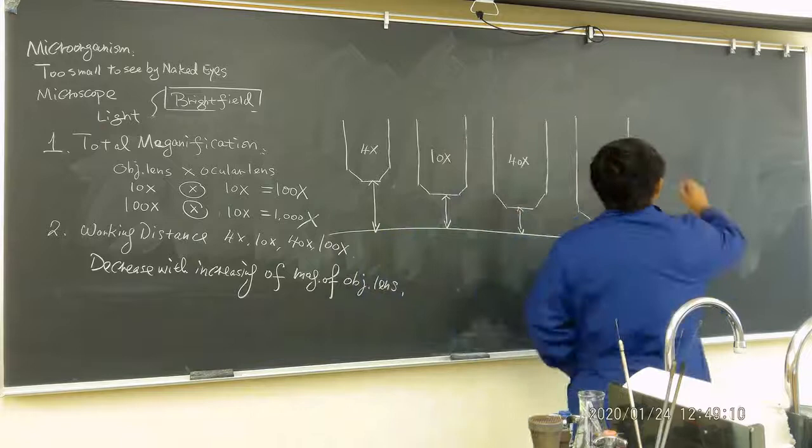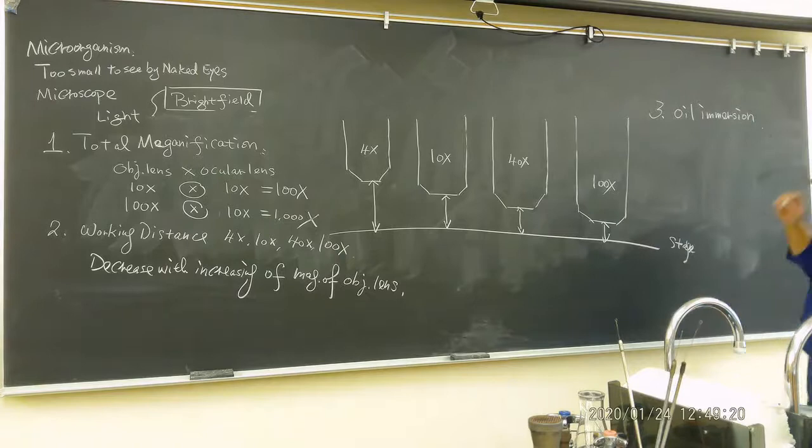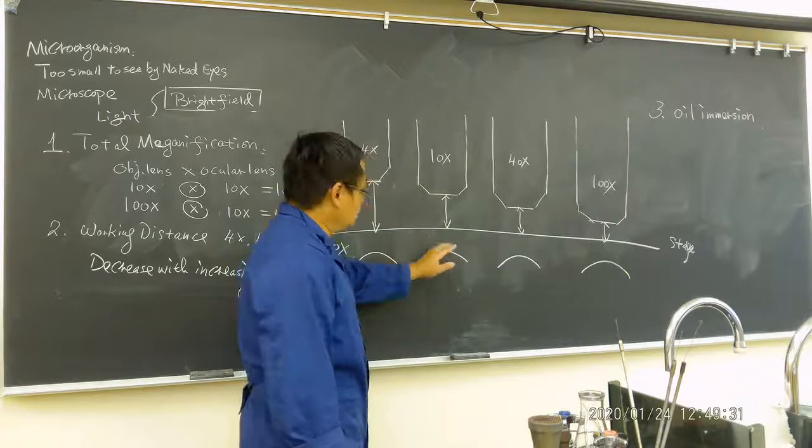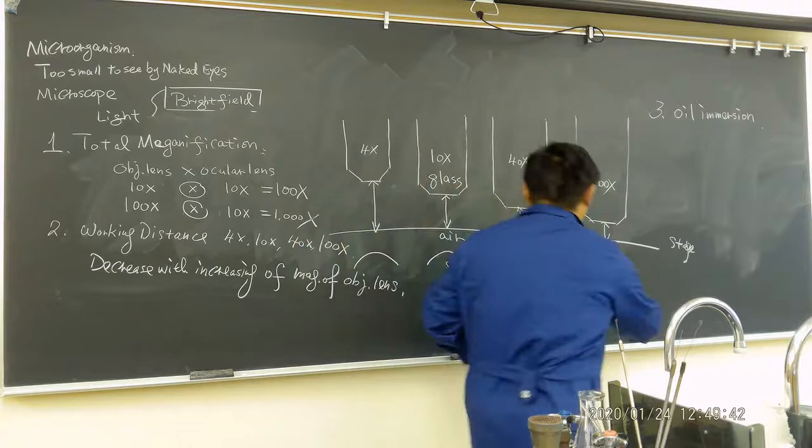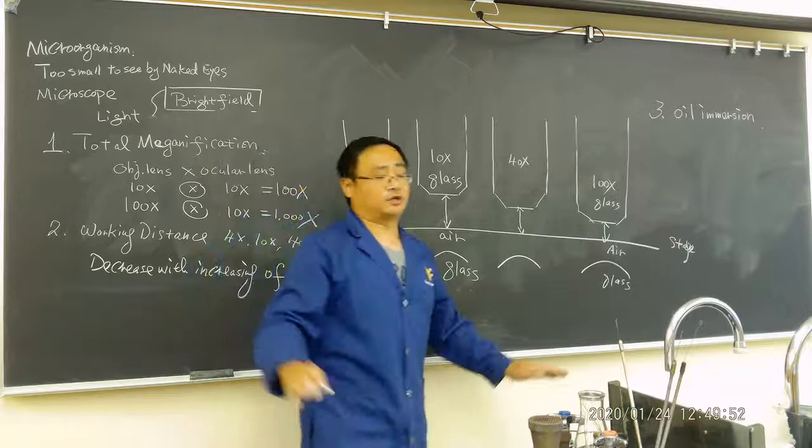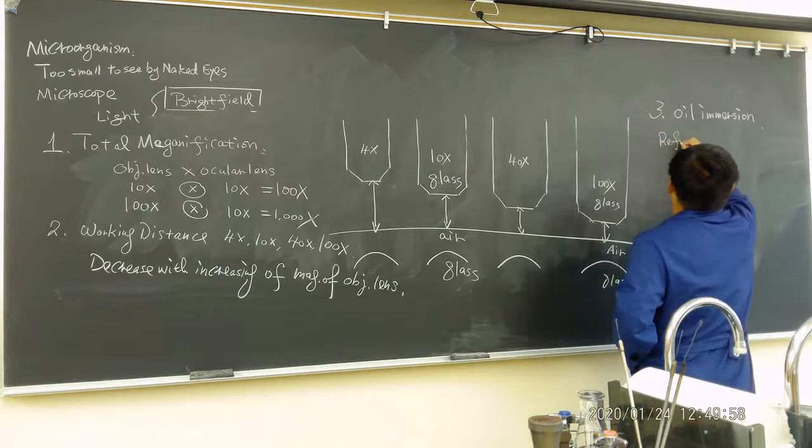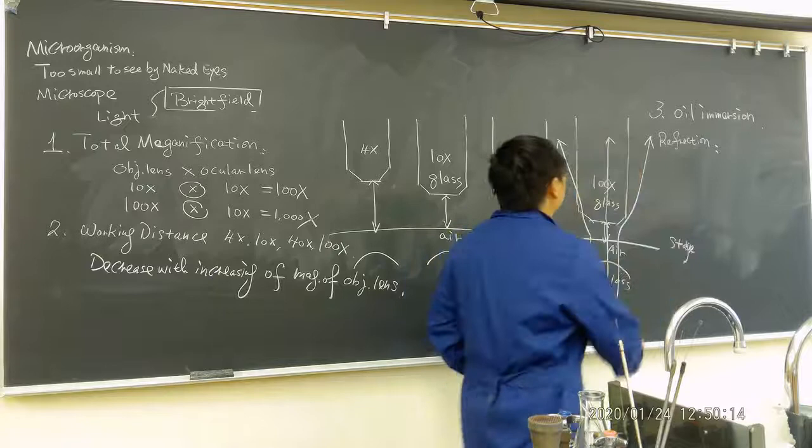That's the third question. I'm going to talk about oil immersion. So what happened is when the light going through - there is a light resource right here. This is glass, this is air, and this is glass again. When the light passing through different media, it will be banded. We say reflection or reflect. When the light is going through here, it will be banded. Something will be banded, something going through. This is called reflection.